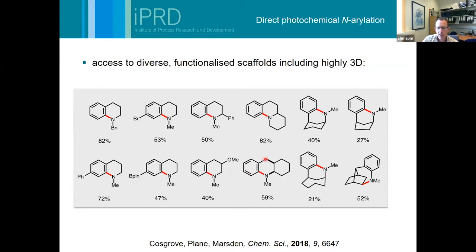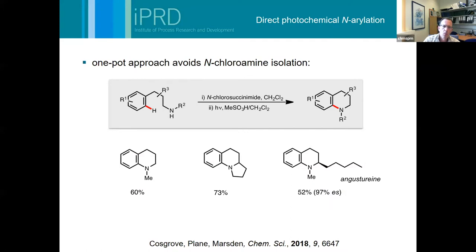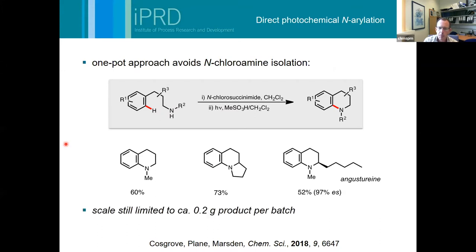You can use this to make a variety of scaffolds - many are planar heterocyclic structures, but you can also get fused and bridged ring systems, particularly these highly three-dimensional structures which were attractive to some industrial collaborators who wanted to try and access larger quantities. One of the issues is that N-chloroamines are not commercial materials - you have to prepare them. So we developed a one-pot process where you form the N-chloroamine in situ: take your free amine, chlorinate it, add acid and turn the lamp on. However, it's still limited to about a couple hundred milligrams per batch over a few hours.